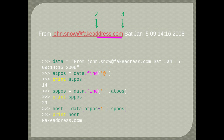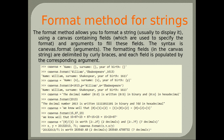The format method allows you to format a string, usually to display it, using a canvas containing fields which specify the format and arguments to fill these fields. The syntax is canvas.format(arguments). The formatting fields in the canvas string are delimited by curly brackets and each field is populated by the corresponding argument.